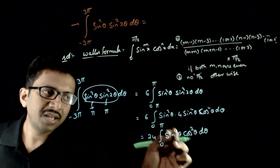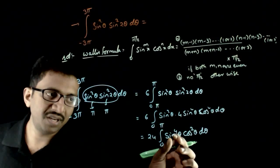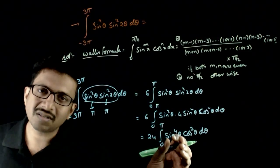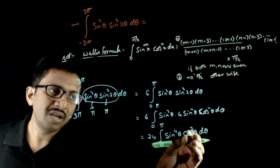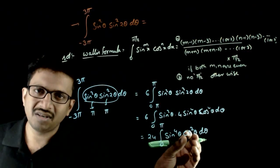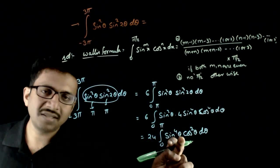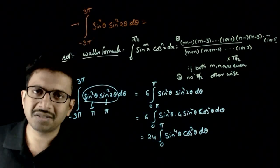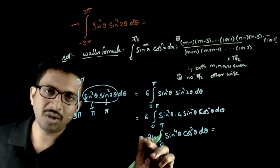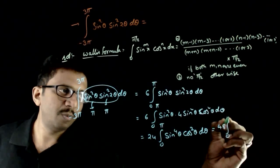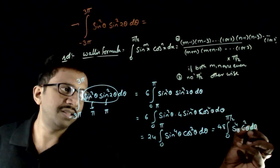Now, if you put pi minus theta in place of theta, the function does not change — because sine of pi minus theta, whole power four, is the same as sine theta power four. And cosine of pi minus theta is minus cosine theta, but squared it again becomes cosine square. So the function is symmetric about pi by two. Therefore, I can write this as two times twenty-four, which is forty-eight times the integration from zero to pi by two of sine power four theta into cosine square theta d theta.